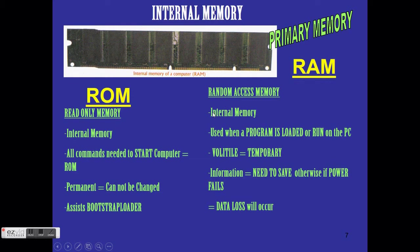RAM is also internal, built into the computer, and is used when programs are loaded or run. ROM is pre-programmed; RAM is volatile, meaning it is temporary. You need to save your information because if the power fails, data that has not been saved will be lost.